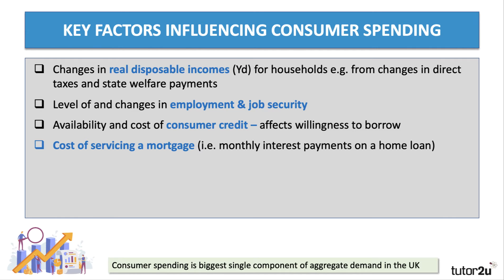The third factor is the availability of and cost of credit — for example, the interest rates on consumer debt such as overdrafts or bank loans — because that affects the willingness and ability to borrow money. Also linked to that is the cost of servicing a mortgage. For most homeowners, the monthly mortgage payment is their biggest single outgoing. If the interest rate on a mortgage goes down, that effectively increases people's purchasing power, disposable income, and ability to spend.